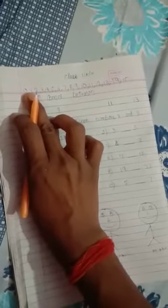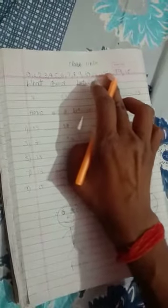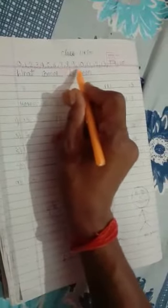0, 1, 2, 3, 4, 5, 6, 7, 8, 9, 10, 11, 12, 13, 14, 15. What comes between? Between means beech mein, yani beech ka number. 7 and 9. 7 and 9 ka just between number kaun sa hai? 7, 9, just between 8. Okay, 11, 13. 11, 13, just between 12. Okay, just between ka matlab kya hota hai? Beech ka number.